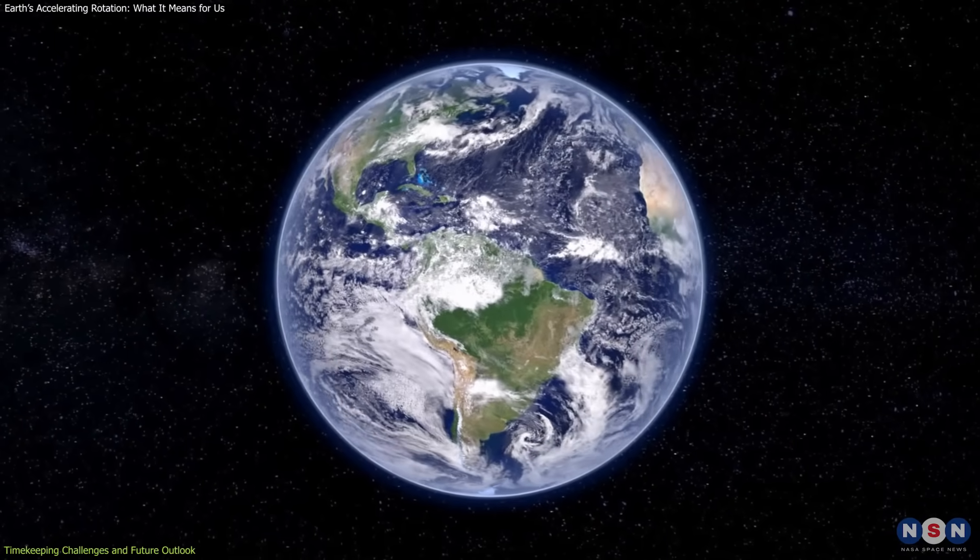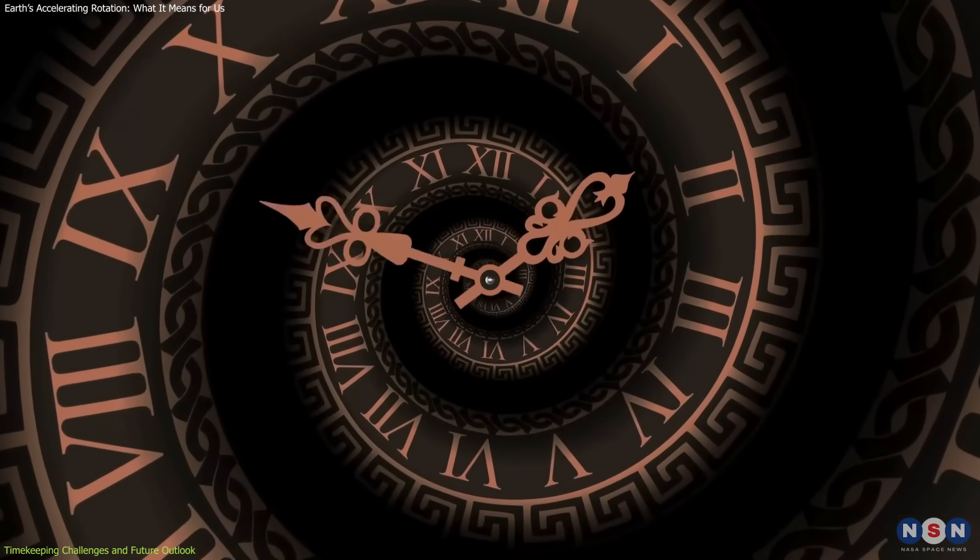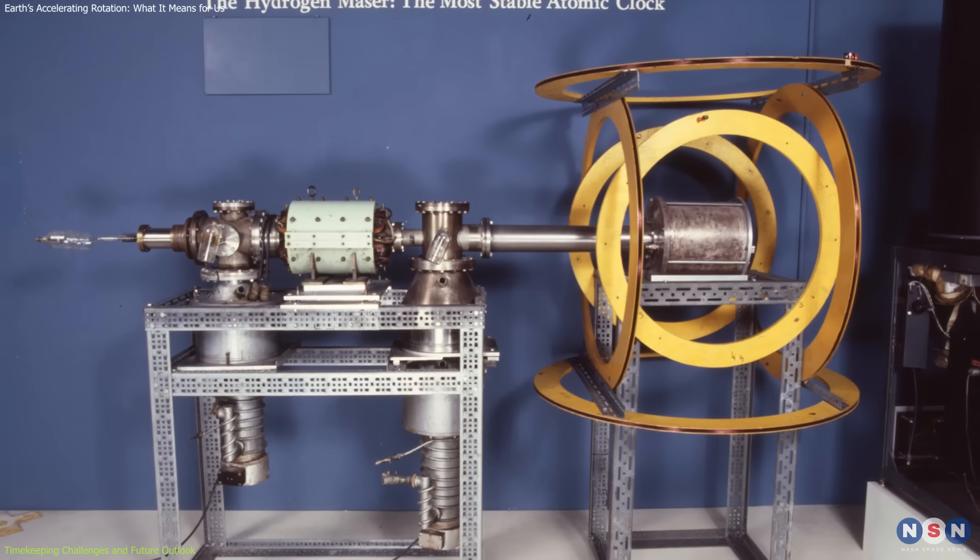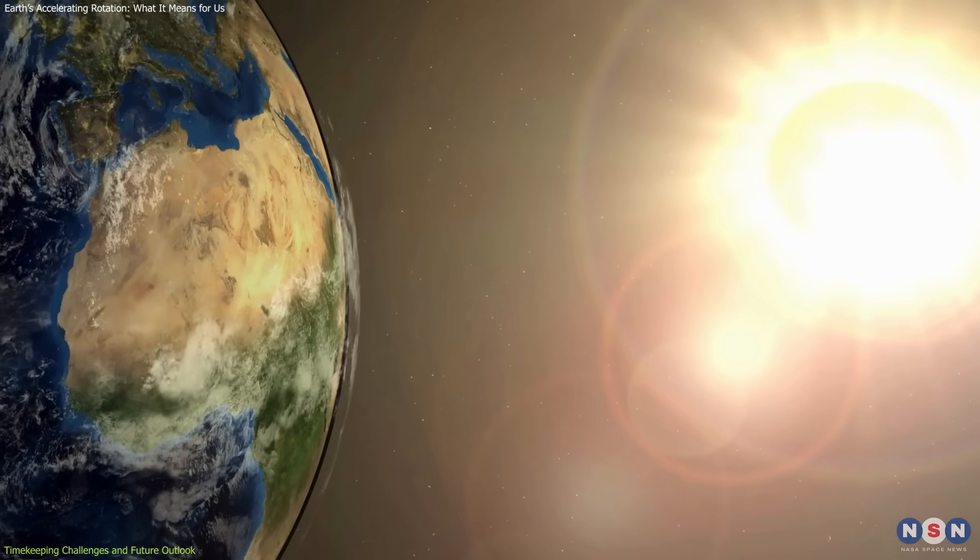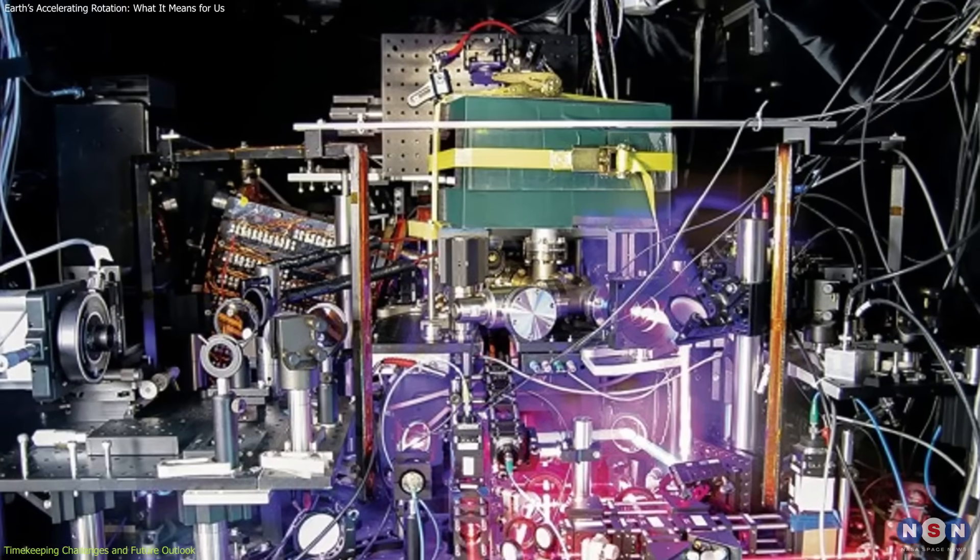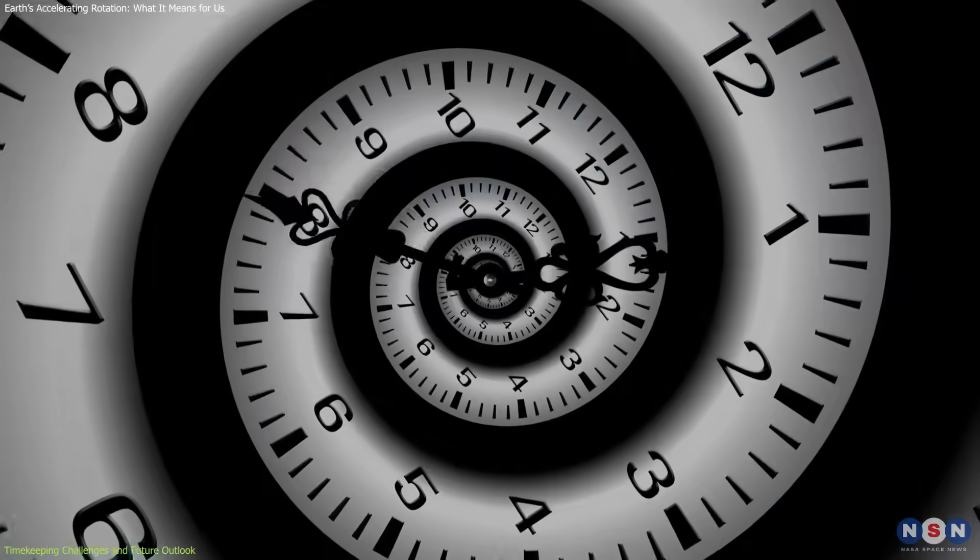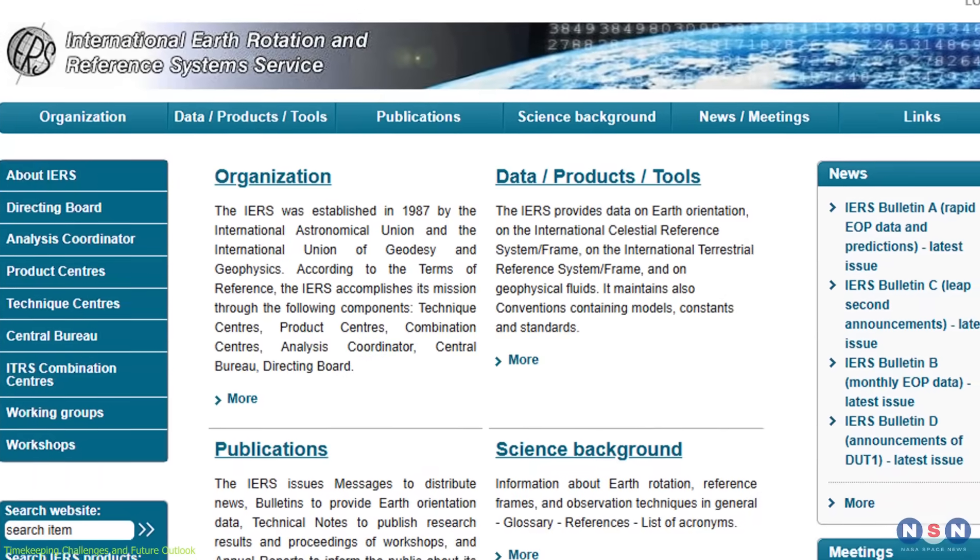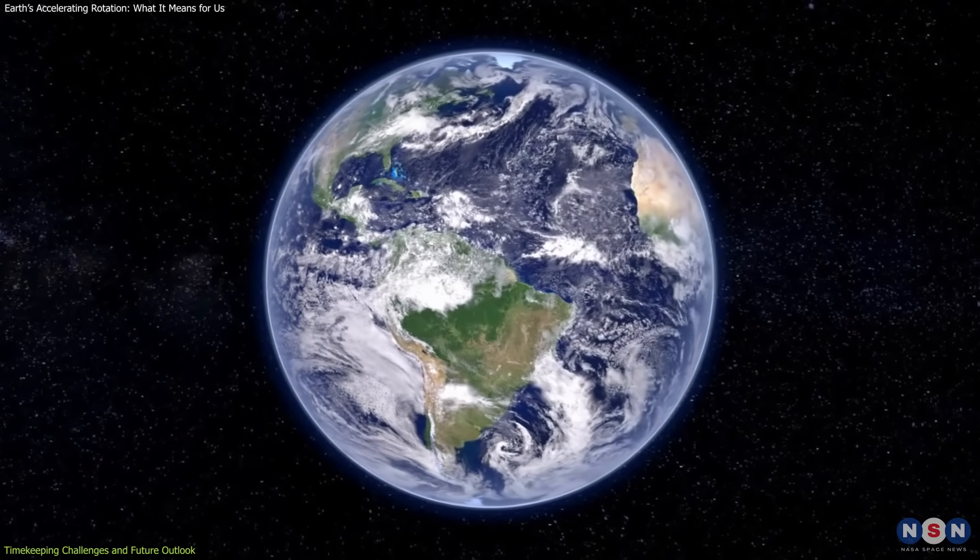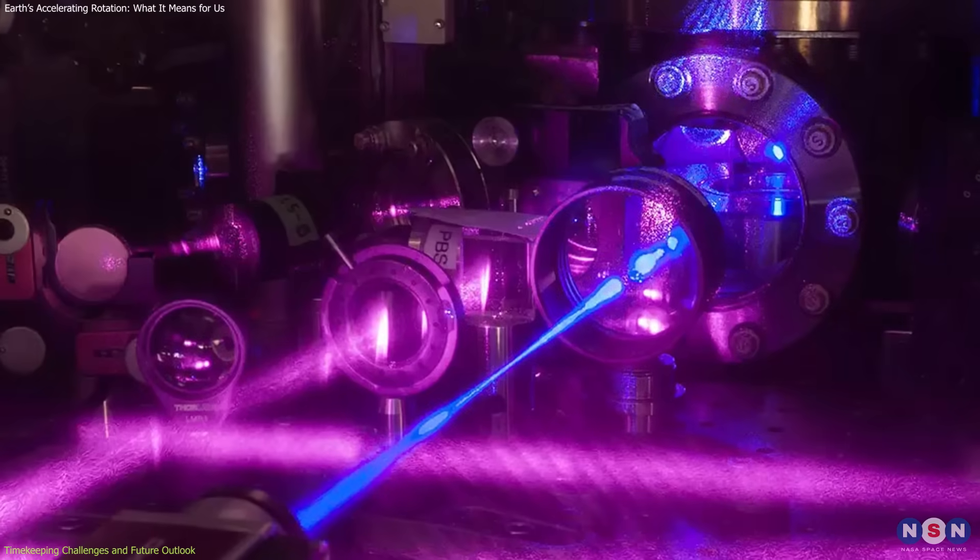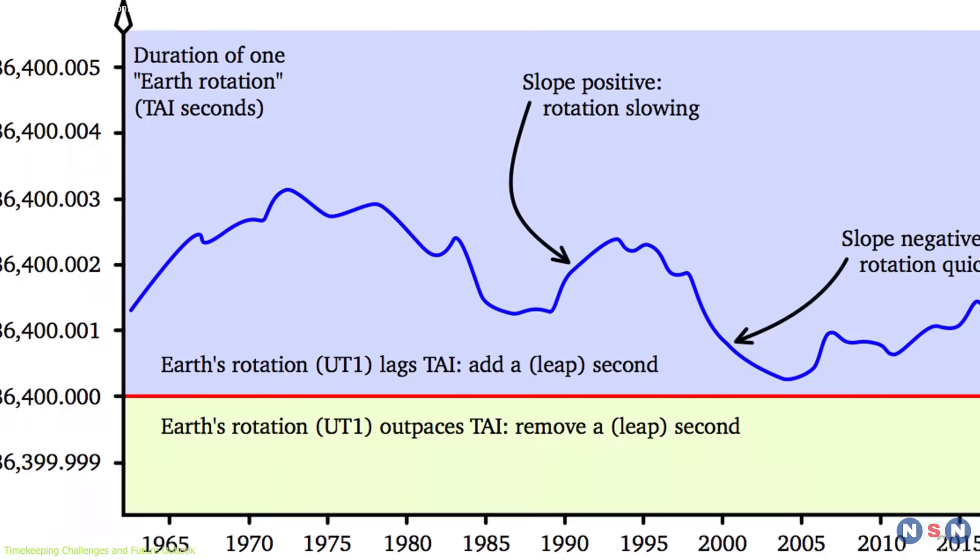While Earth's accelerating rotation doesn't affect daily life, it poses challenges for timekeeping systems. Atomic clocks, which rely on Earth's rotation to stay synchronized with solar time, need adjustments when the rotation deviates from the standard 24-hour cycle. The International Earth Rotation and Reference Systems Service, IERS, is responsible for monitoring Earth's rotation and ensuring that atomic clocks remain in sync with solar time.